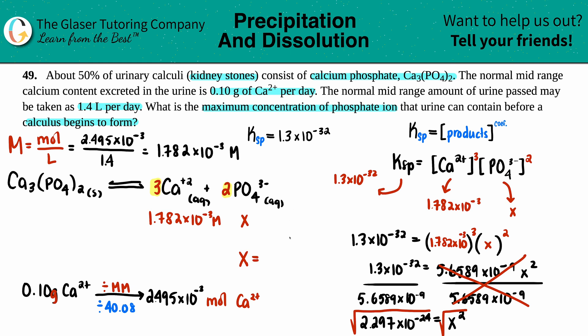X equals 1.5 times 10 to the negative 12th, technically 2 sig figs. And remember, that's molarity. So we wanted to find that maximum concentration of phosphate ion. That was just X. So PO4 3- was just X, and it's 1.5 times 10 to the negative 12th, and that's molarity. There you go.